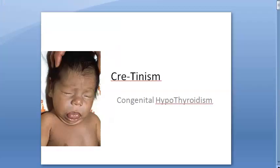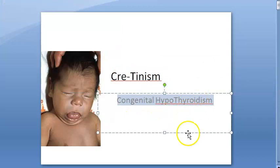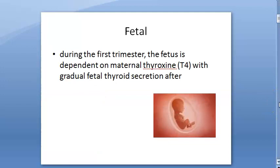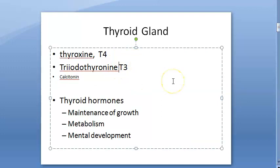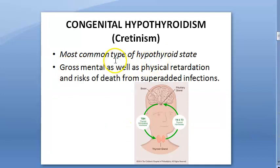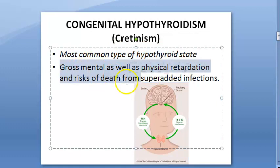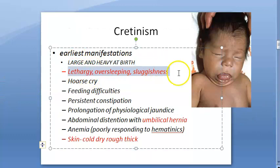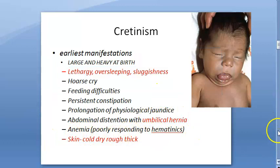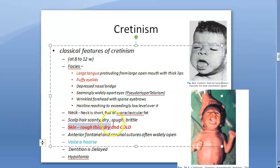To recap: cretinism is congenital hypothyroidism. In the first trimester, the baby is dependent on maternal thyroxin; then its own thyroid takes over, producing T4, T3, and calcitonin. These hormones are essential for growth, metabolism, and mental development. Cretinism is the most common hypothyroid state. Early manifestations include lethargy, oversleeping, sluggishness, umbilical hernia, and cold, dry, rough skin.